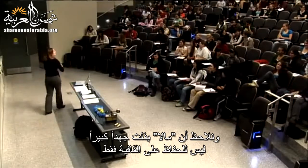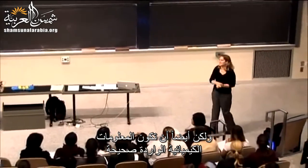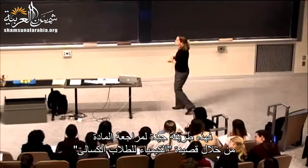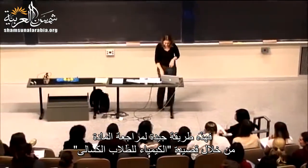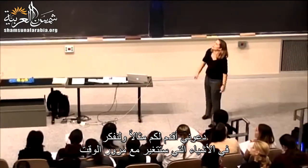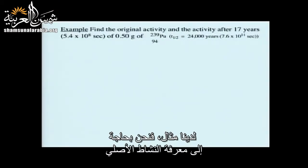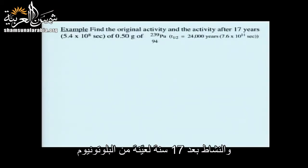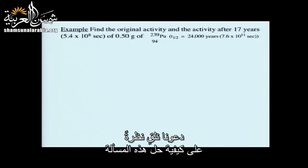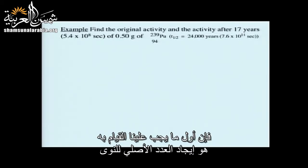Now let's do an example: finding the original activity and the activity after 17 years of a sample of Plutonium-239. The first thing we want to do is find the original number of nuclei, N-zero.